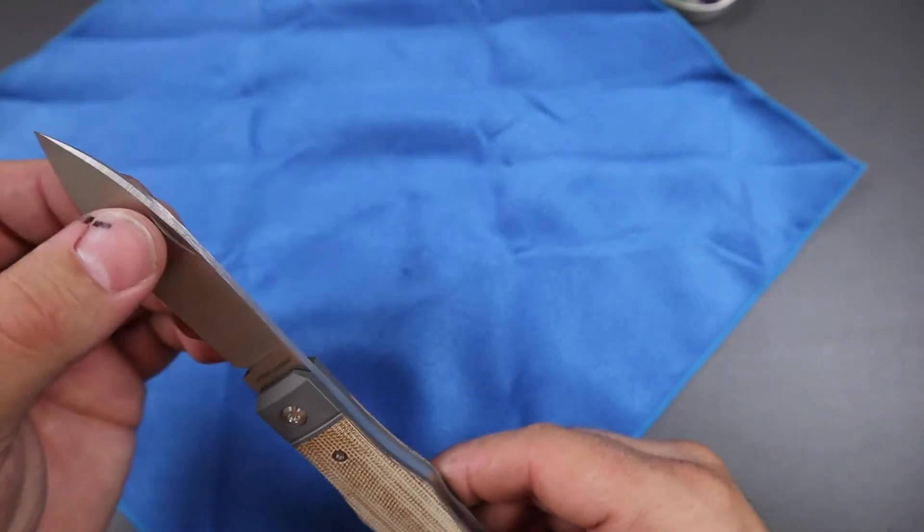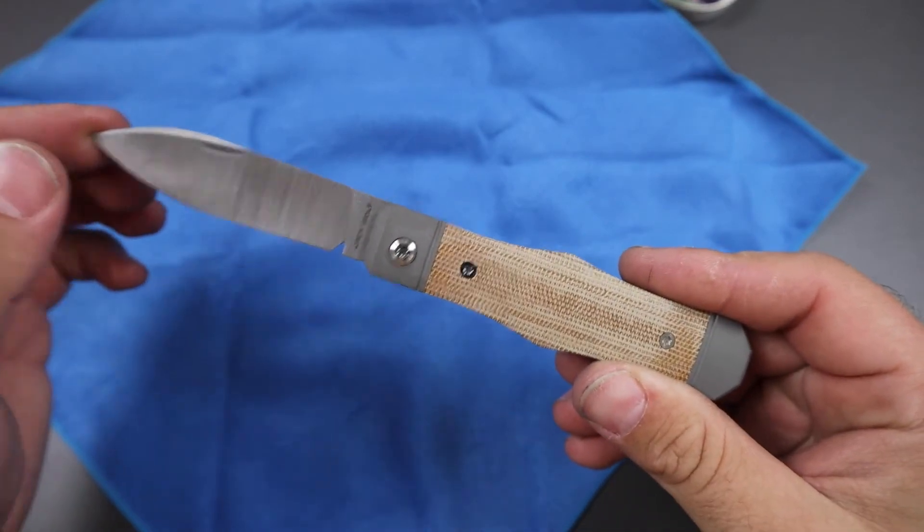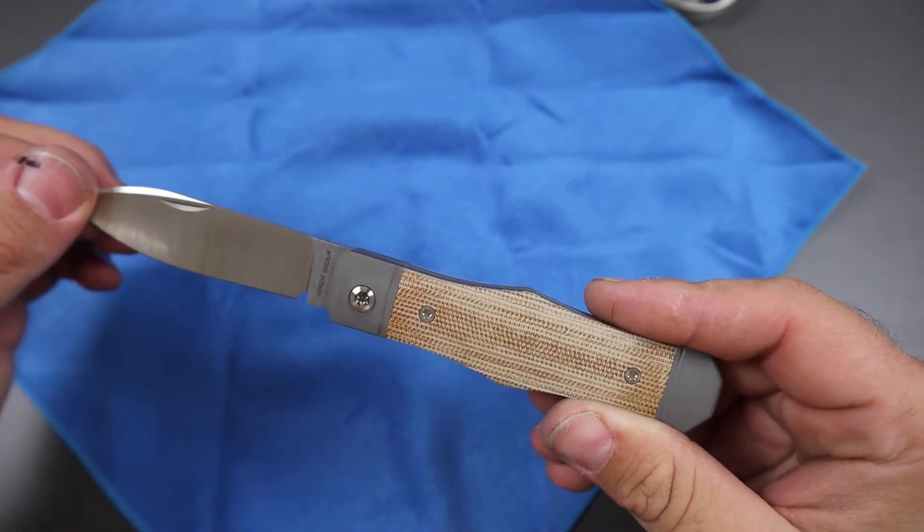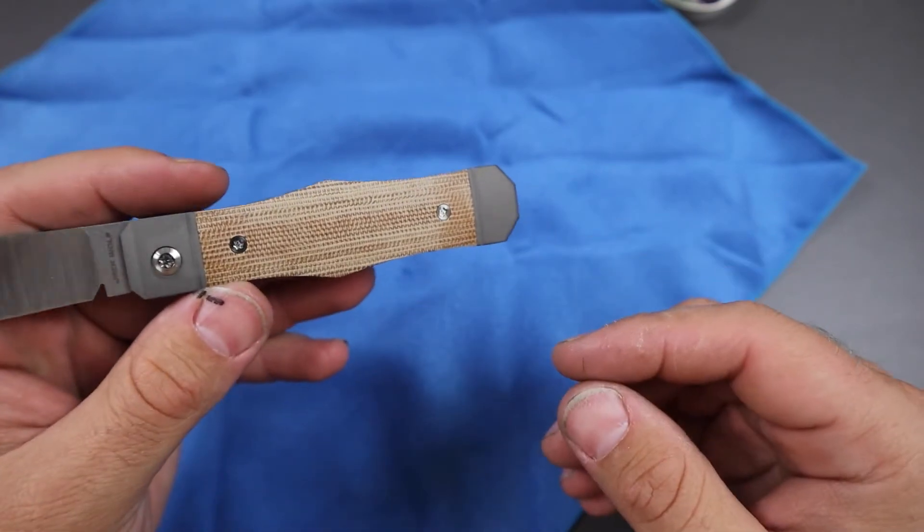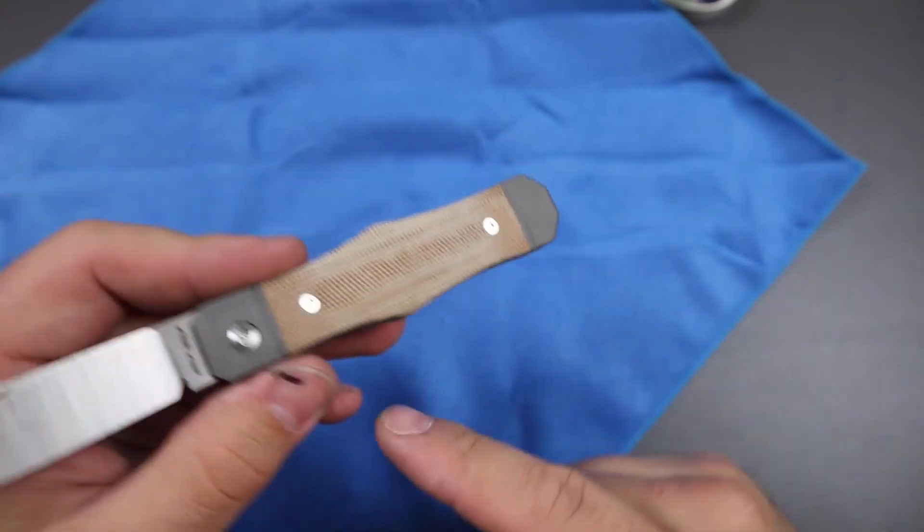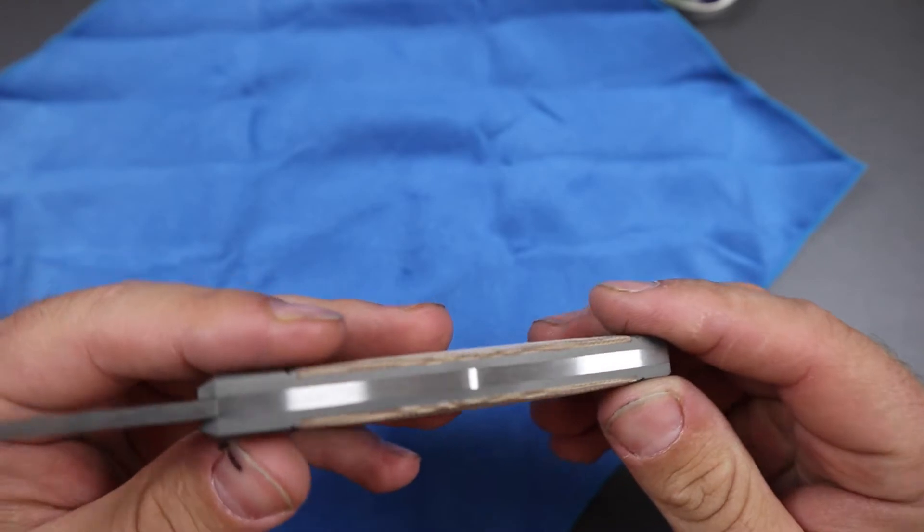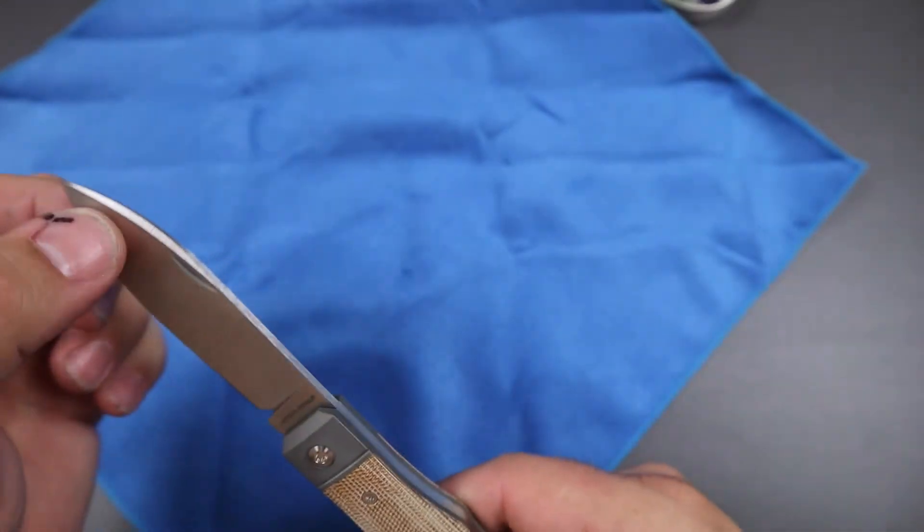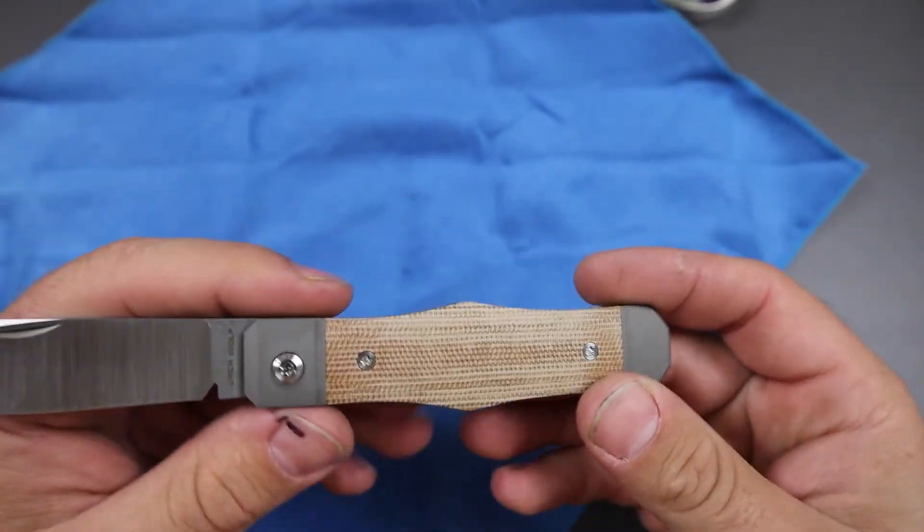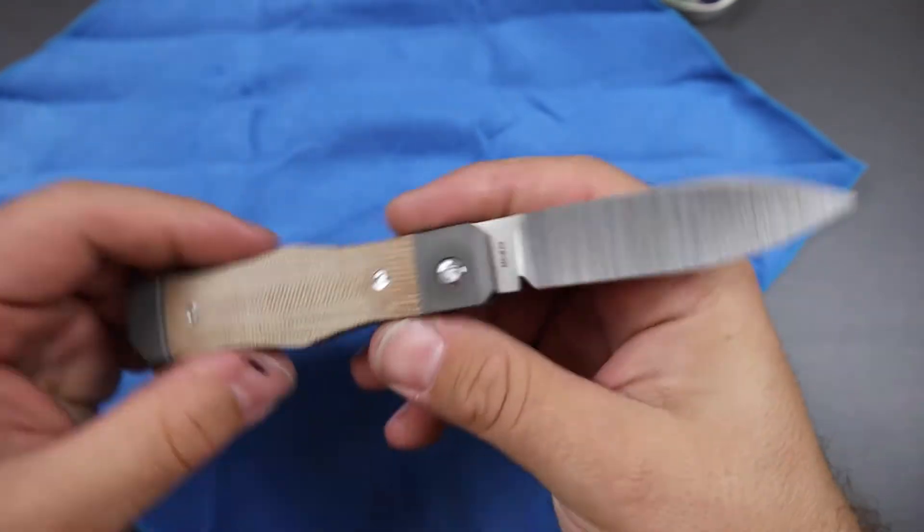actually send it off to The Knife Modders, but right now their books are closed and I don't think they offer DLC anyway. But Way of Knife just started offering DLC services, so I think it would look really cool with the carbon fiber scales to have the handle, like just the whole handle and the blade, all DLC coated black. Just have a whole fully blacked out knife. I think it would look really sweet.